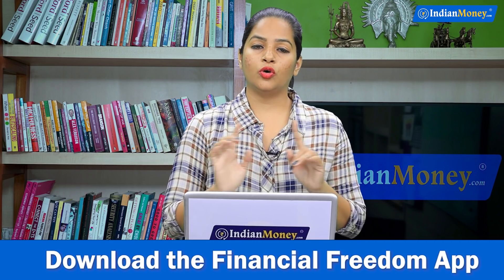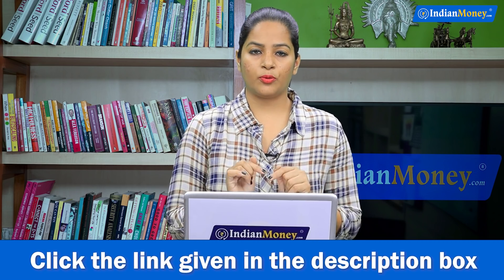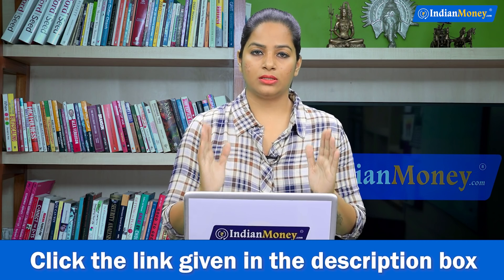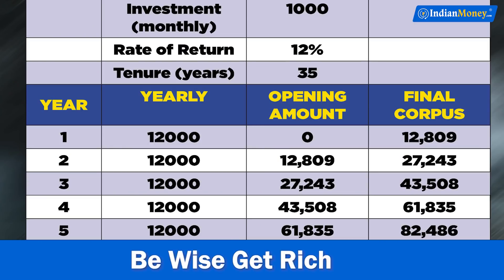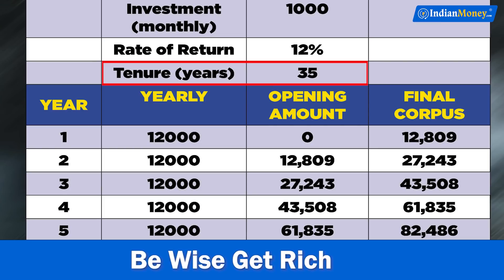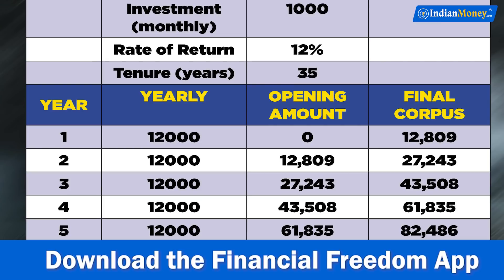So we will watch a table. We are going to go to 35 years. The rate of return is 15%. If you are 10 years old, it will be 35 years old.